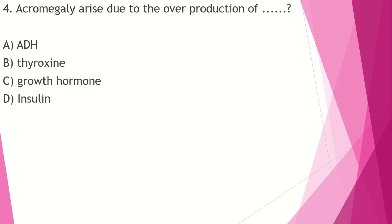Acromegaly is due to the overproduction of which hormone? Option A: ADH (antidiuretic hormone). Option B: thyroxine. Option C: growth hormone. Option D: insulin.